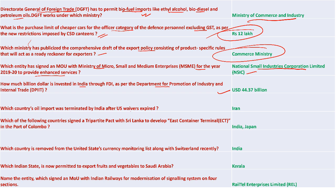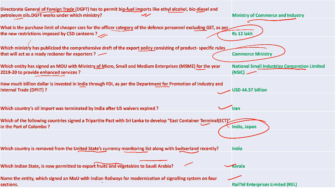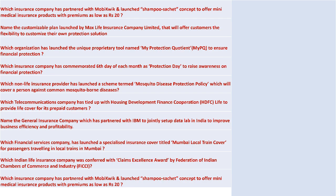India terminated oil imports from Iran after the US waiver expired. India and Japan signed a tripartite pact with Sri Lanka to develop the East Container Terminal. India has been removed by the US from its Currency Monitoring List, along with Switzerland. Kerala can now export fruits and vegetables to Saudi Arabia. Railtail is the entity that signed an MOU with Indian Railways for modernizing signaling systems on four sections.